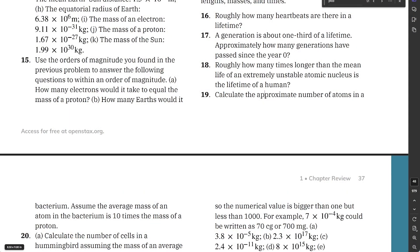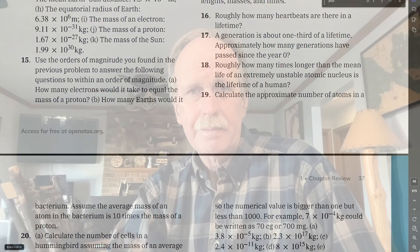The next question is pretty typical of something you'll see on a physics test. They will give you something that you have to calculate into something usable. In question number 19, they're asking us to calculate the number of atoms in a bacterium, assuming that the mass of an atom in a bacterium is 10 times the mass of a proton. What's the mass of the proton? Fortunately, that was in the last question. That is 9.11 times 10 to the negative 31 kilograms.